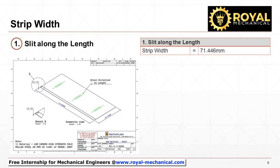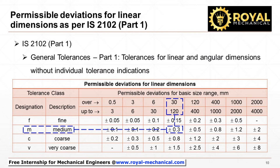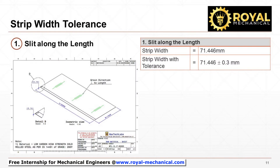Now let's calculate the utilization for option 1: slit along the length of sheet metal. The calculated strip width for option 1 is 71.446 mm. Referring to the general tolerances for linear dimension, consider medium tolerance class for the strip width. The tolerance value shall be plus or minus 0.3 mm. So the strip width for option 1 will be 71.446 plus or minus 0.3 mm.